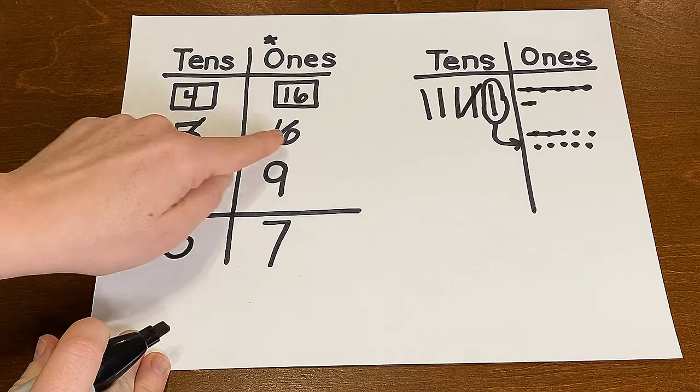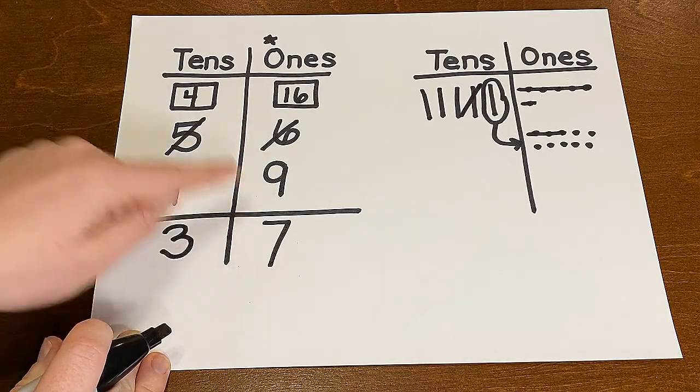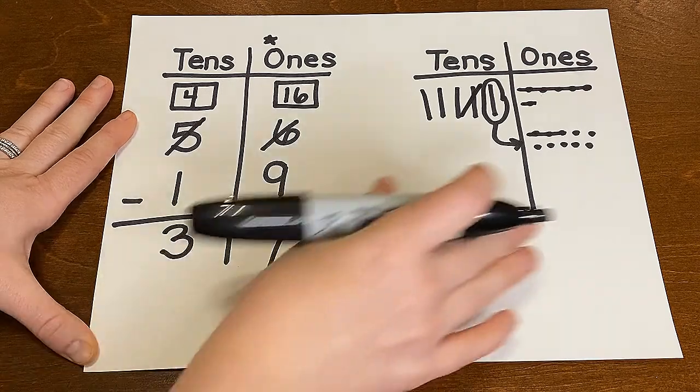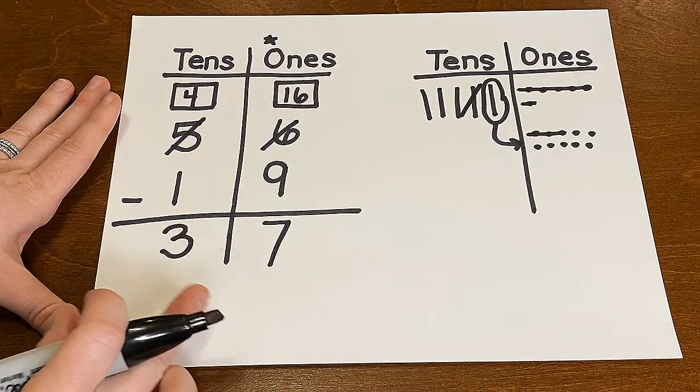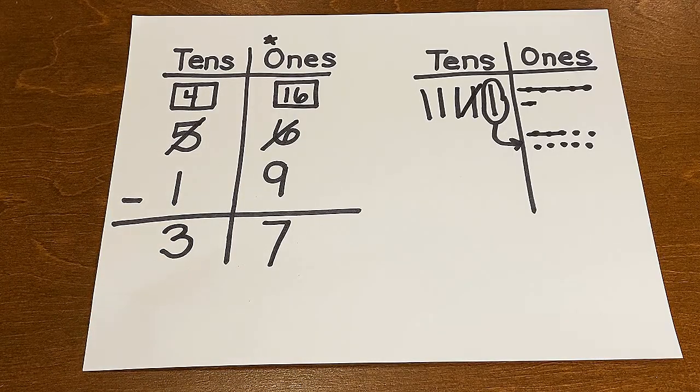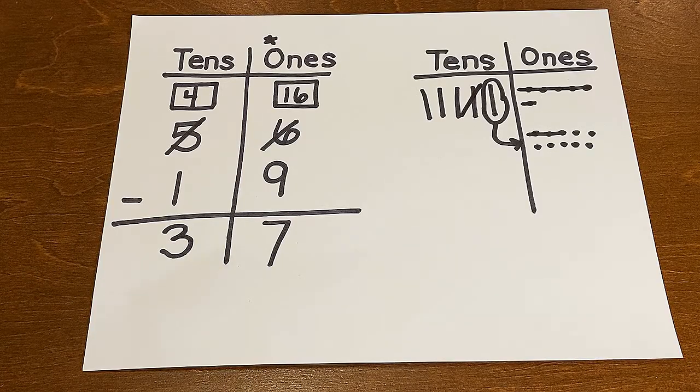So there you have it. The answer to 56 take away 19 is 37. And I drew a picture and I also recorded my work side by side. And you can see how the two go together and show the same thing.